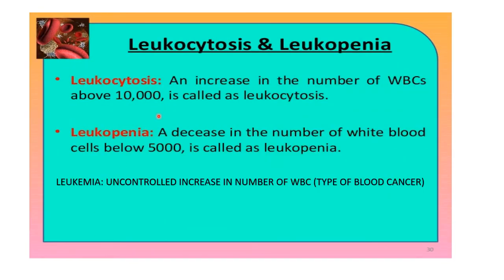Leukocytosis means an increase in number of WBCs above 10,000 and is known as leukocytosis. Leukopenia is a decrease in the number of white blood cells below 5,000 and is known as leukopenia.